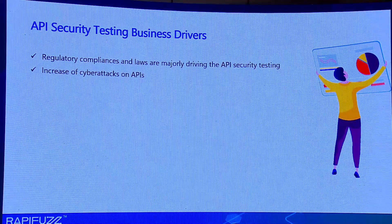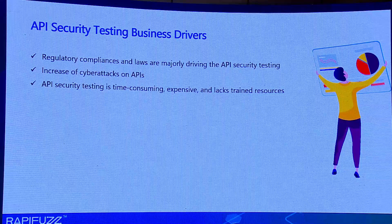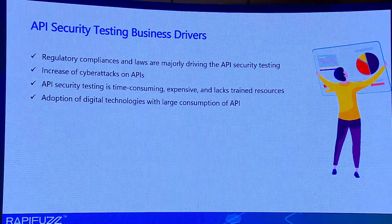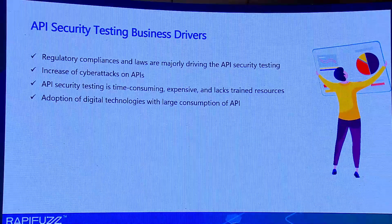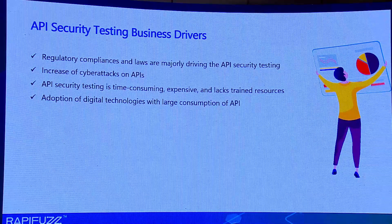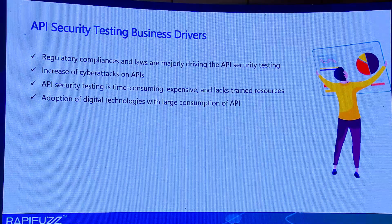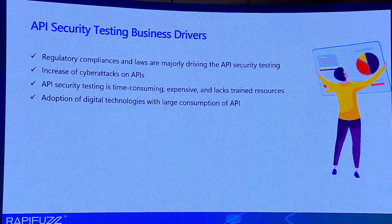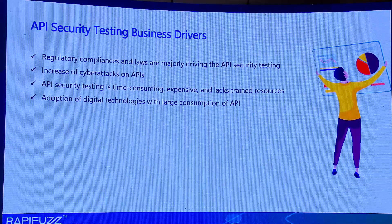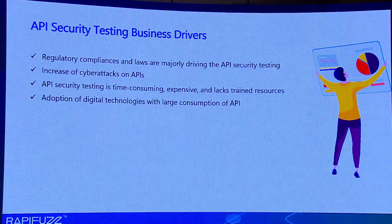Cyber attacks on APIs have been increasing. I was speaking to one of the CISOs just before this started, and he shared two problem statements. First: 'I do not get visibility of what I'm consuming.' Second: 'Even if I do get visibility, I don't have the right manpower to test.'